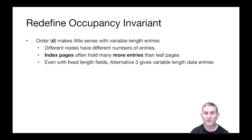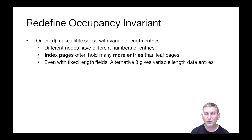We're going to have to redefine this occupancy invariant to deal with this. Order, the way we defined it before, makes little sense with variable length entries. It doesn't make sense to talk about having between D and 2D entries on a page because the entries are very different sizes. Therefore, different nodes will have different numbers of entries. And index pages, as we'll see, often can hold many more entries than leaf pages.